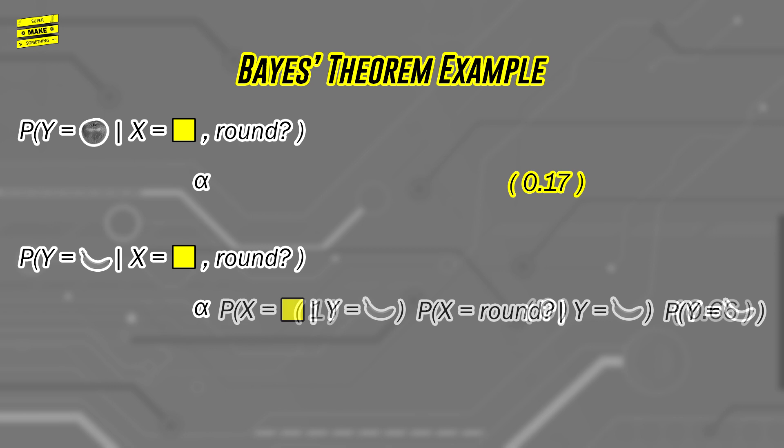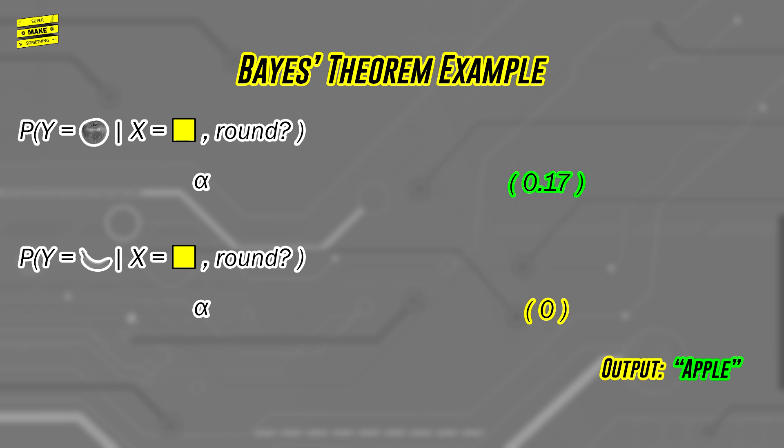But repeating this calculation for a banana gives 0% since there is a 0% chance that a banana is round. By adding another feature to describe each class, the image classification algorithm is now able to correctly identify that the fruit it is seeing is an apple and sort everything with 100% accuracy.